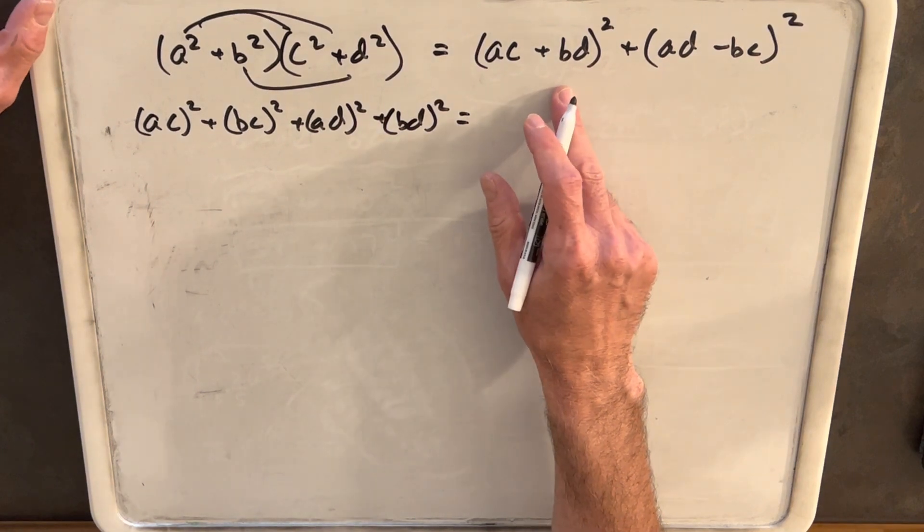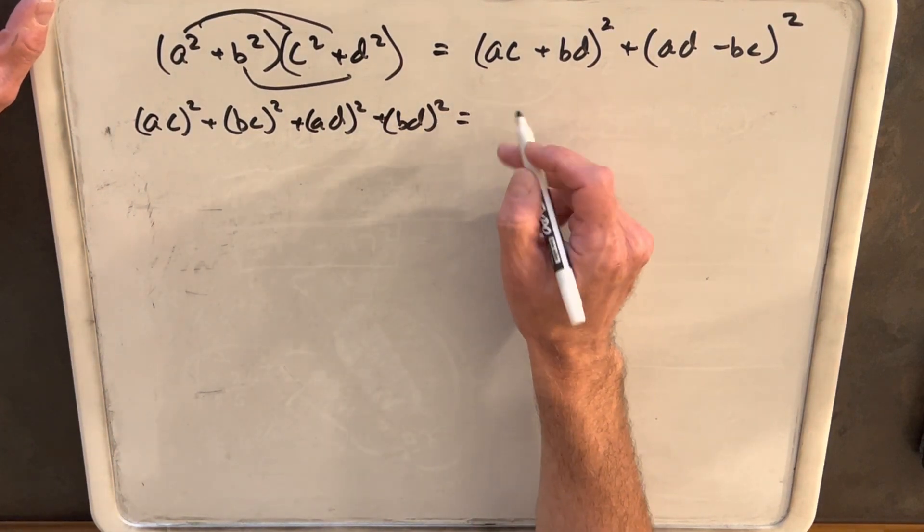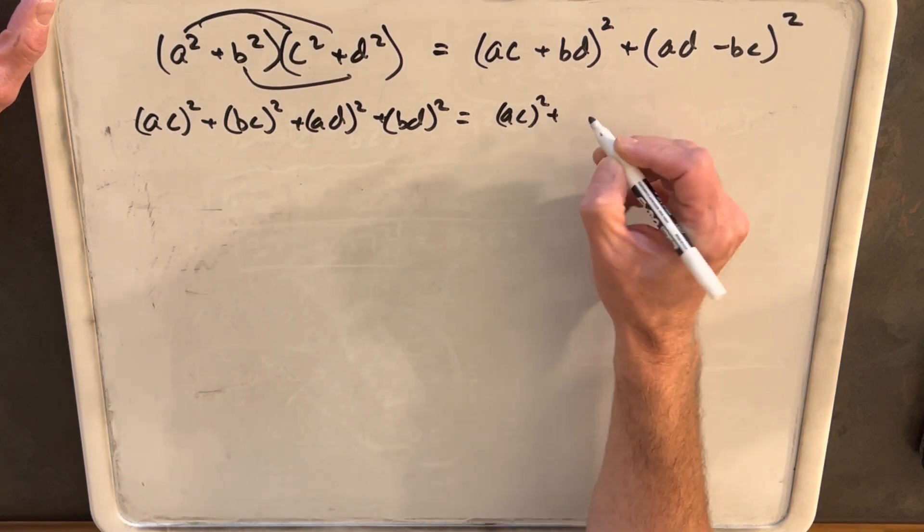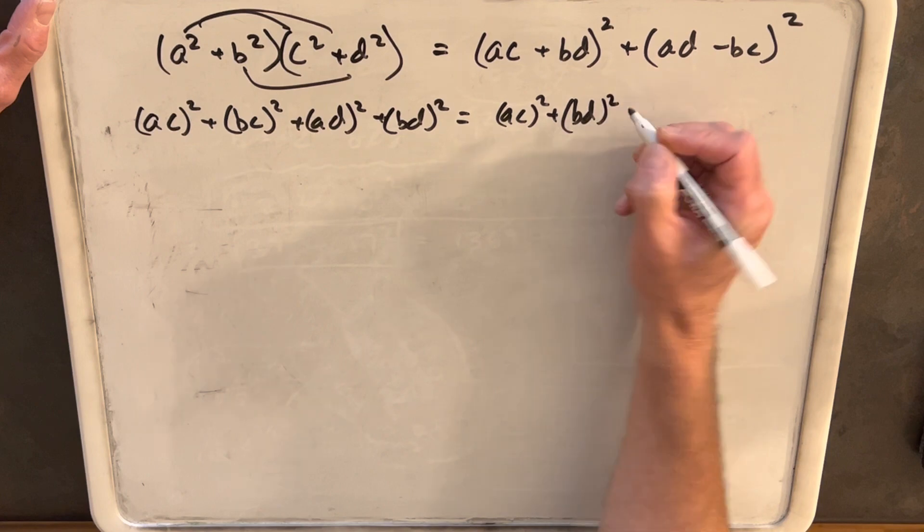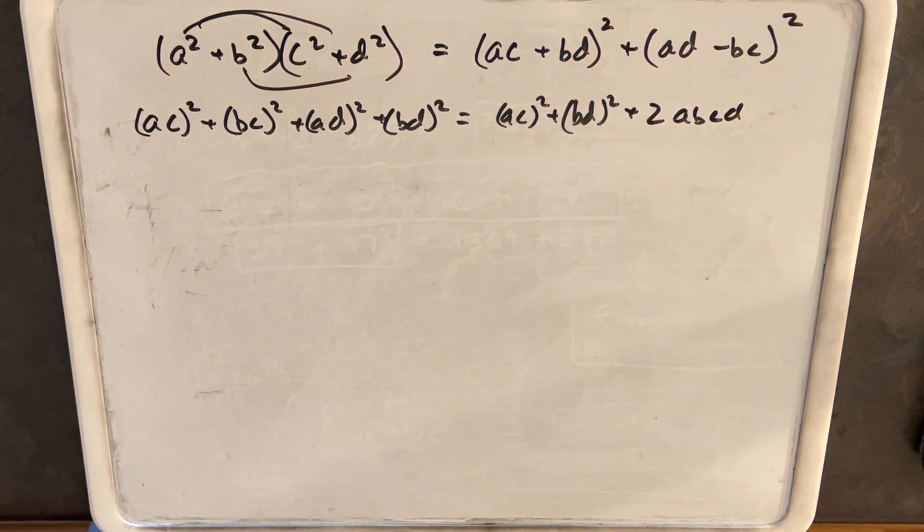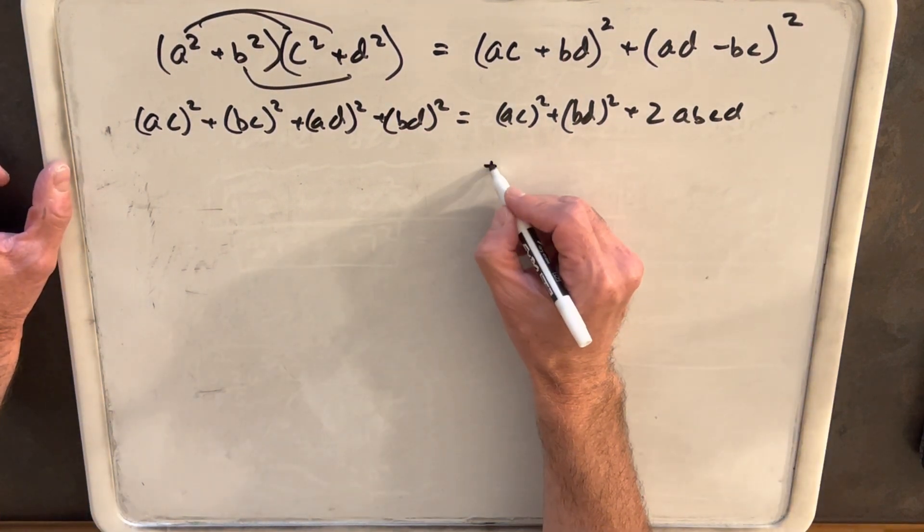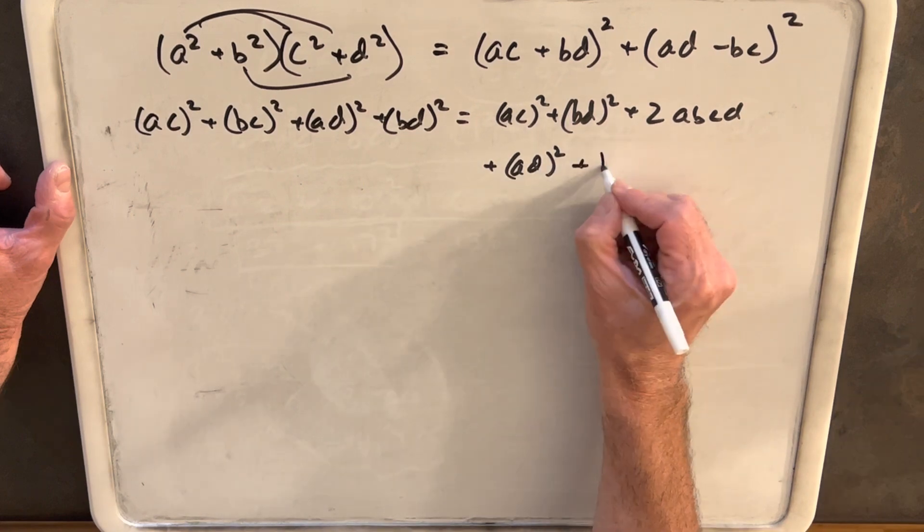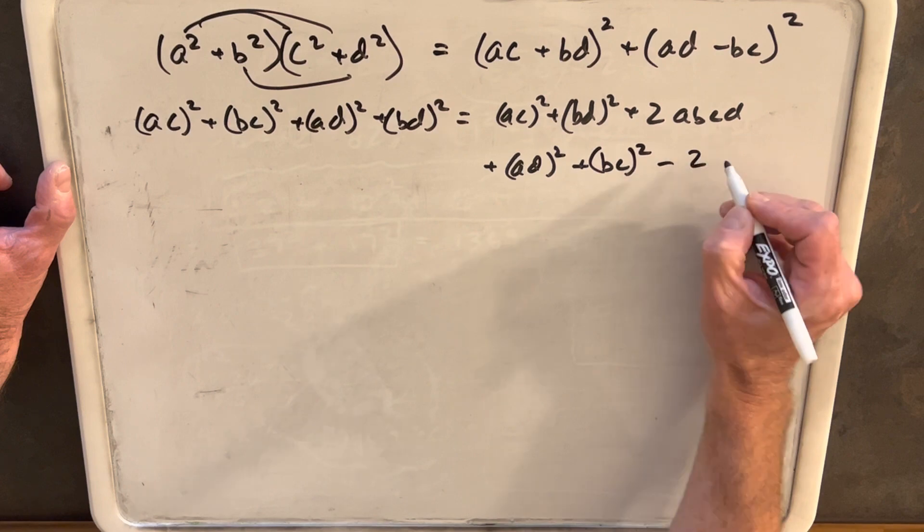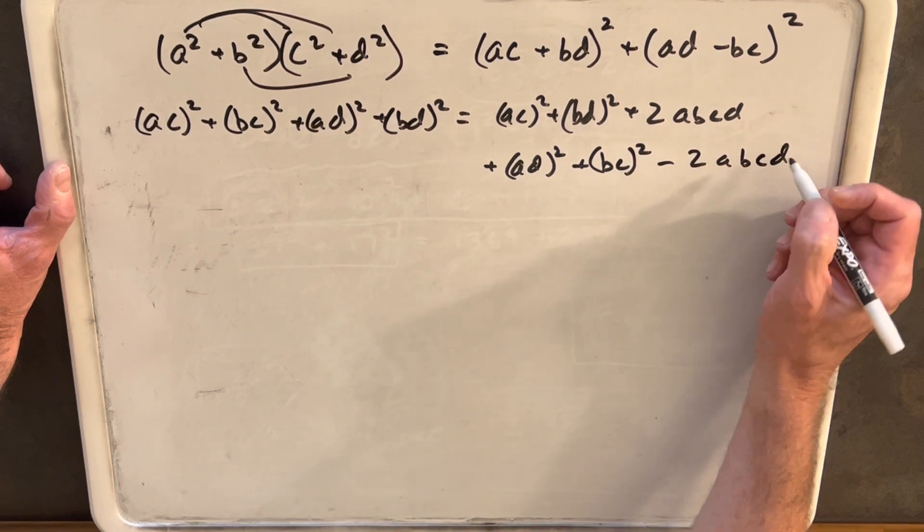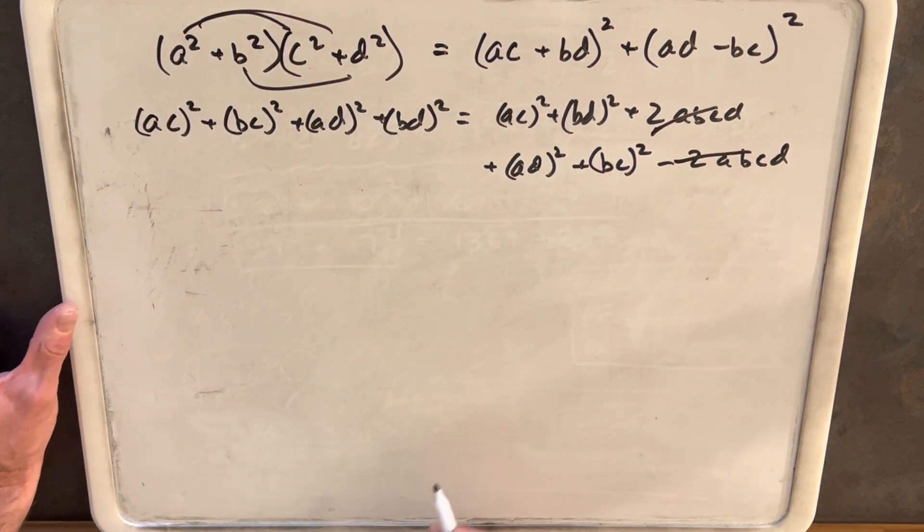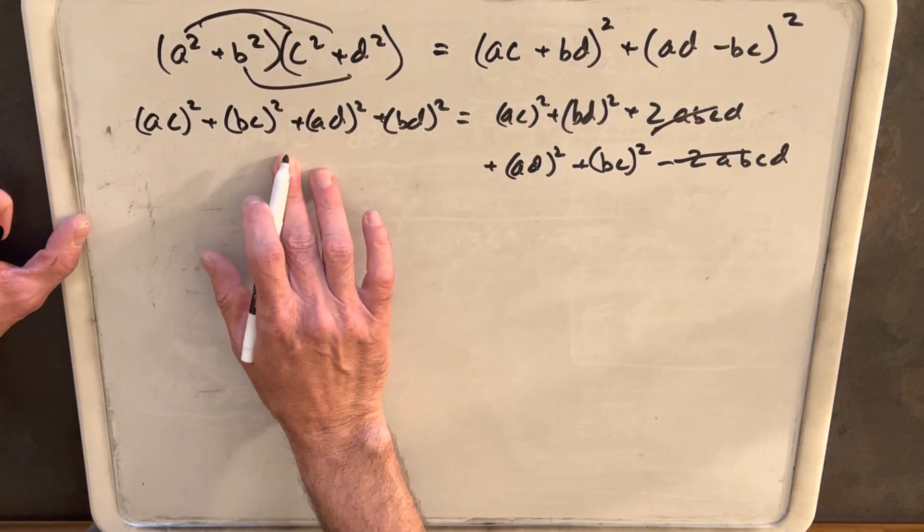Then on the right side, we'll have to square out each of these individually. So we'll first square this first piece and we'll have ac² + bd² + 2abcd for the middle terms. And then squaring this piece, we'll have ad² + bc², and this is going to be minus 2abcd. The beauty of that, of course, is these two terms are going to cancel, and we're left with—notice that this side is exactly the same as that side.